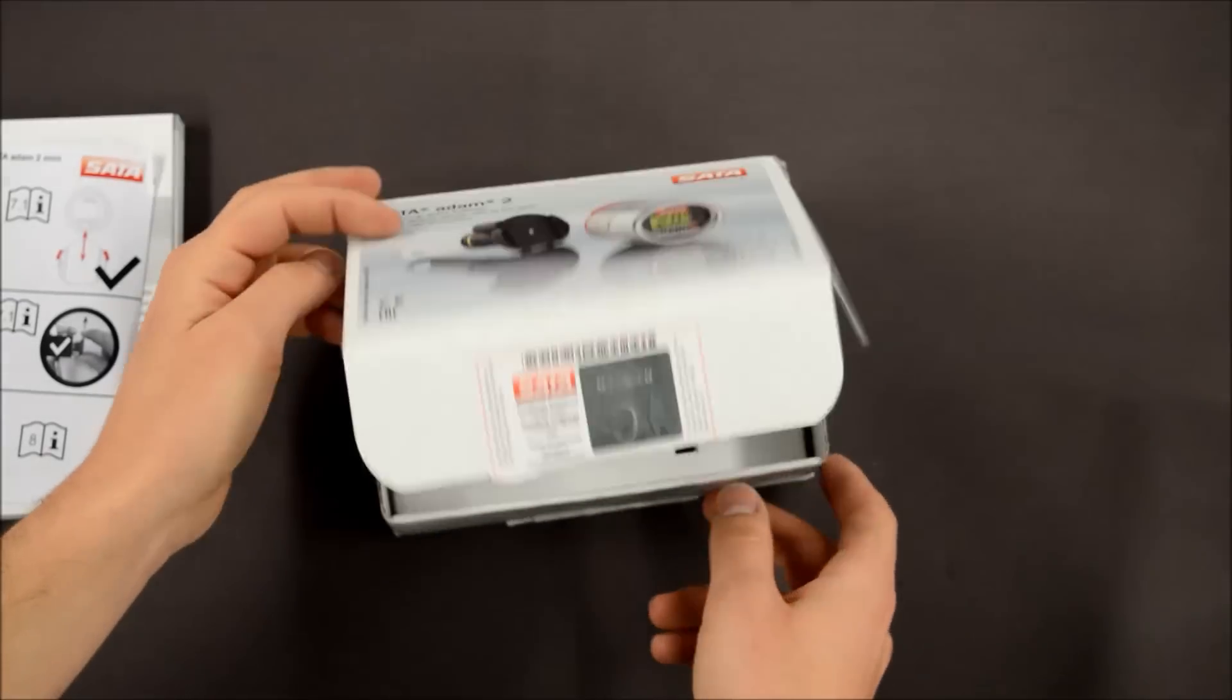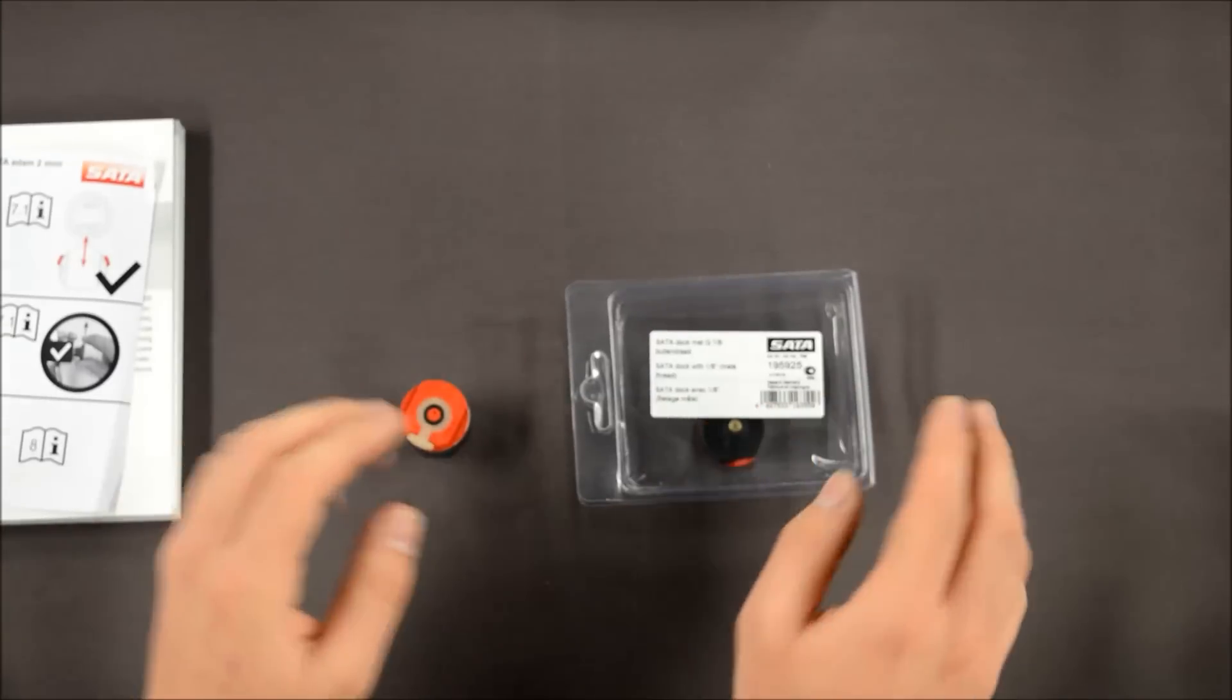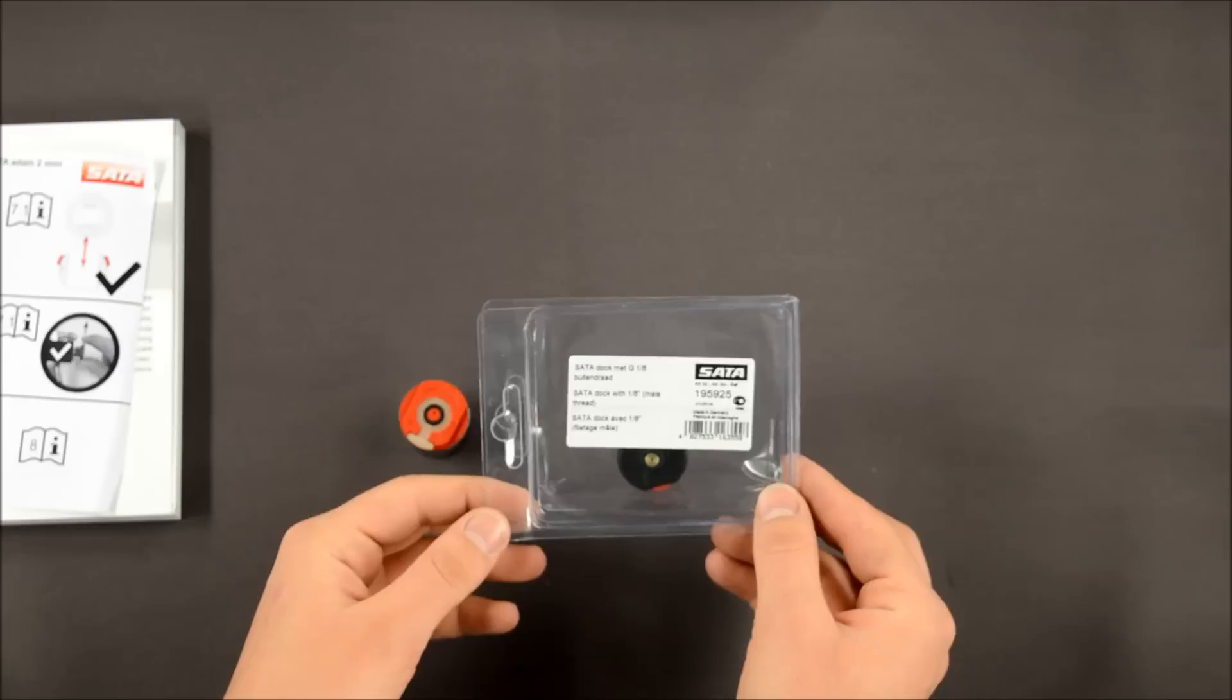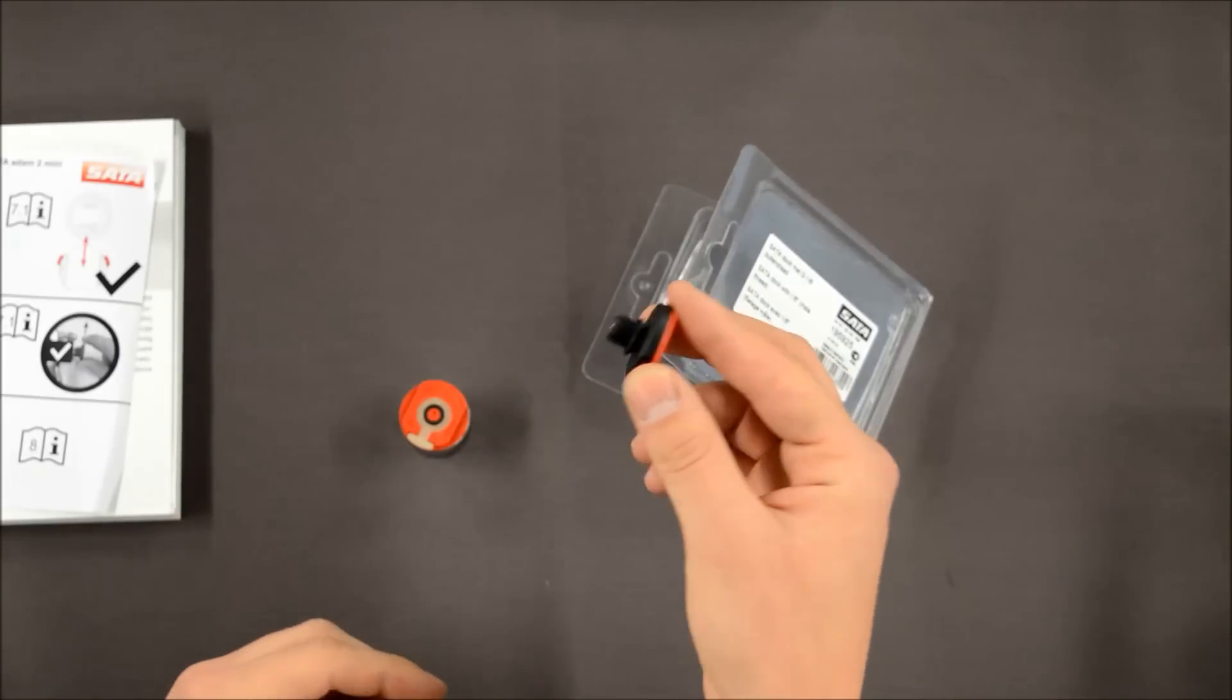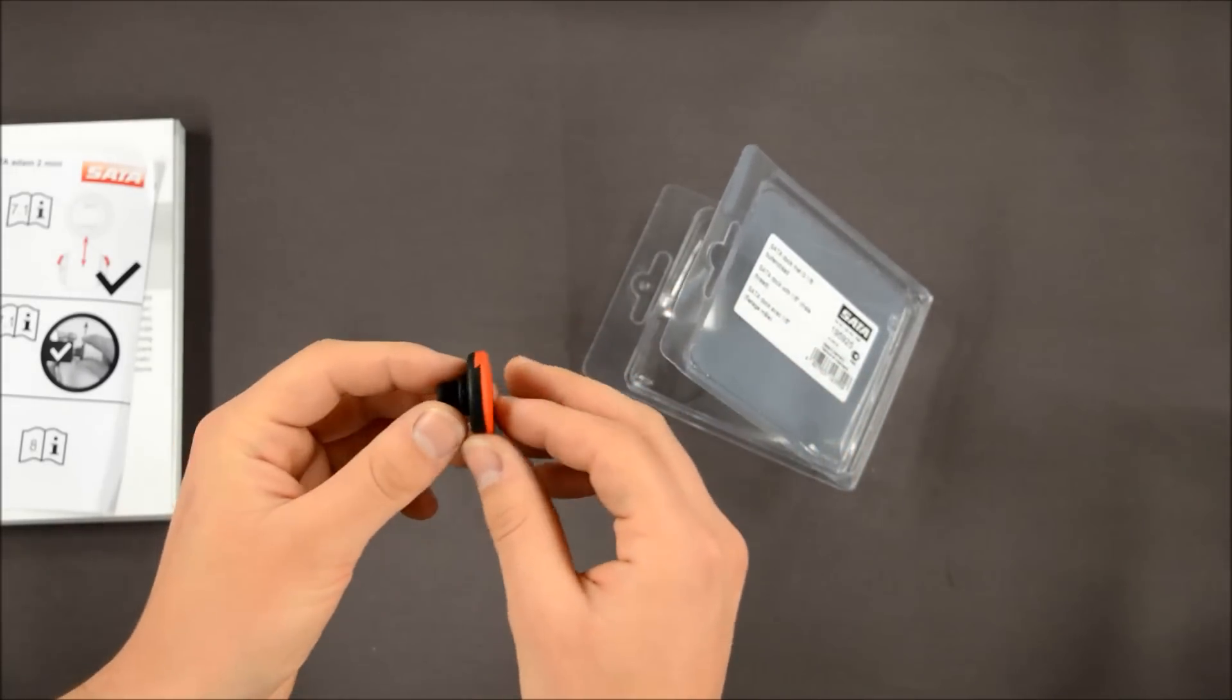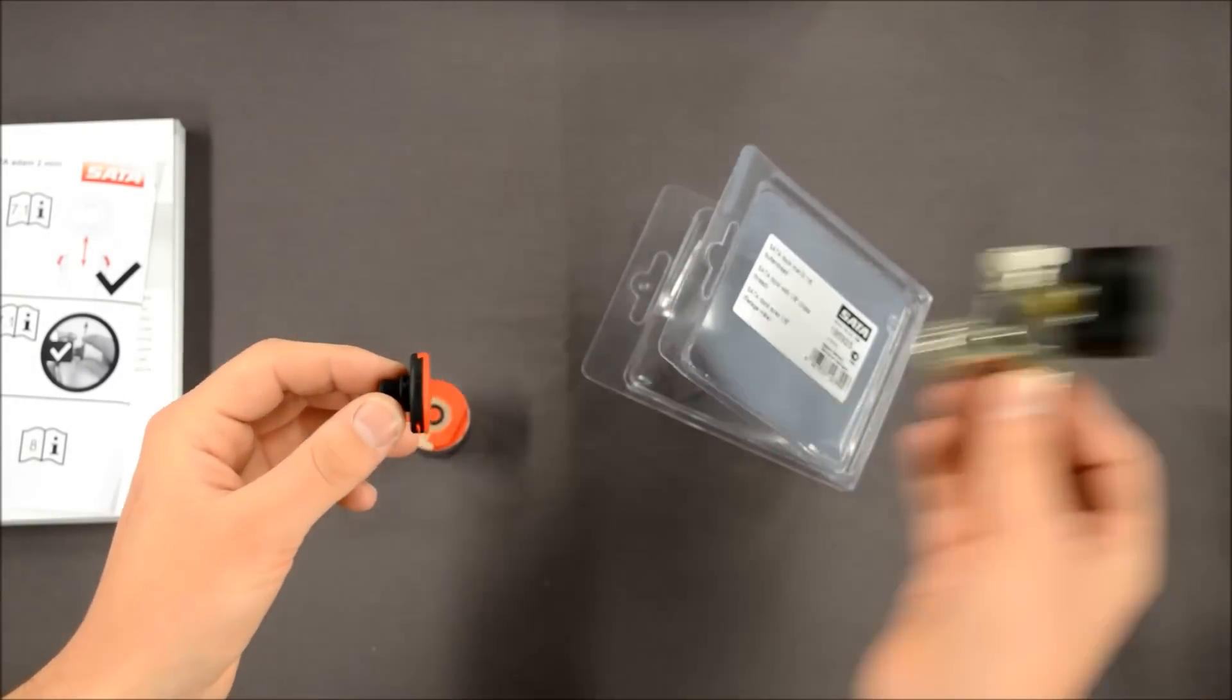So those are the two different docks we've got for our guns. And we've also got the retrofit dock which means we can put this onto any other gauge that fits at the bottom of our gun. For example, this one here,